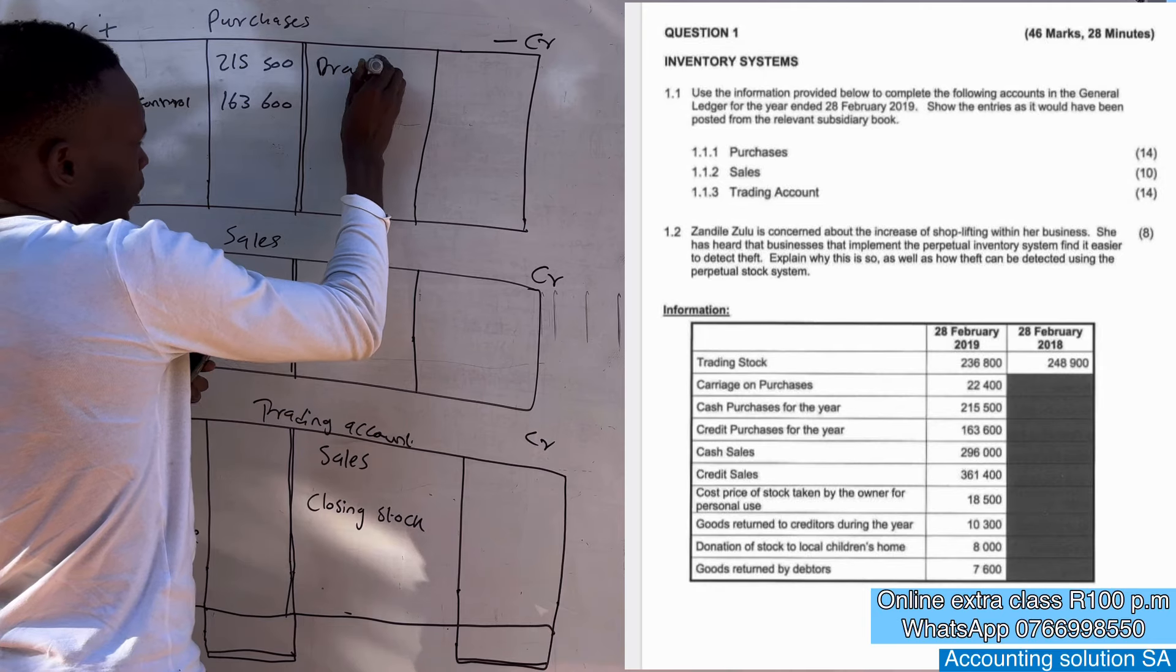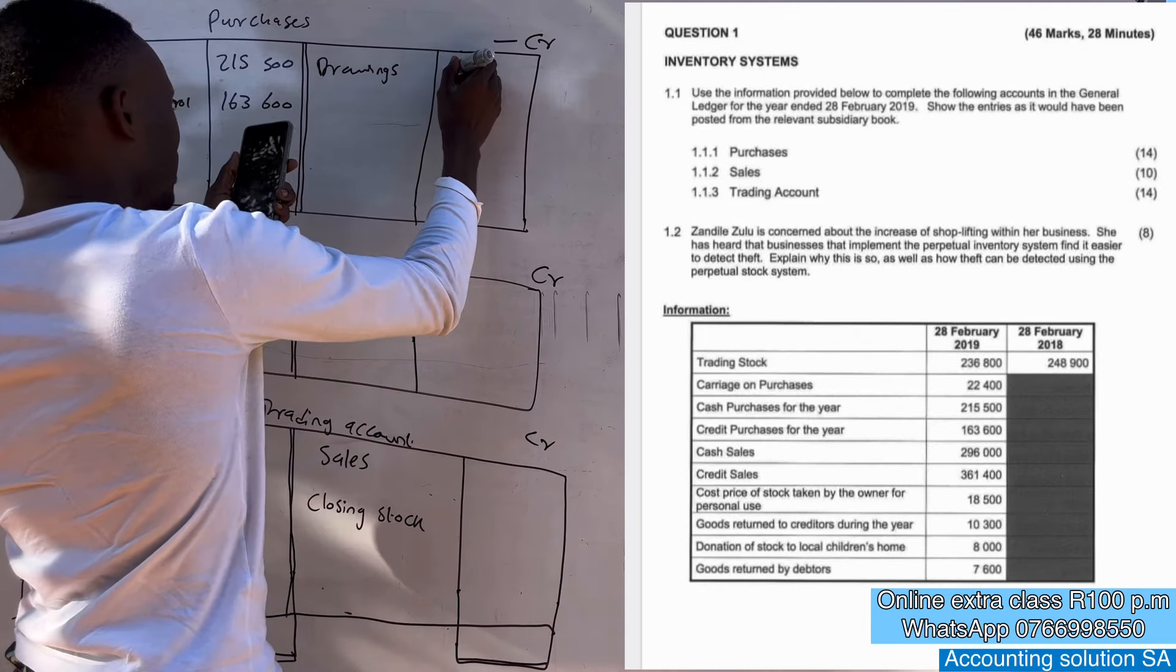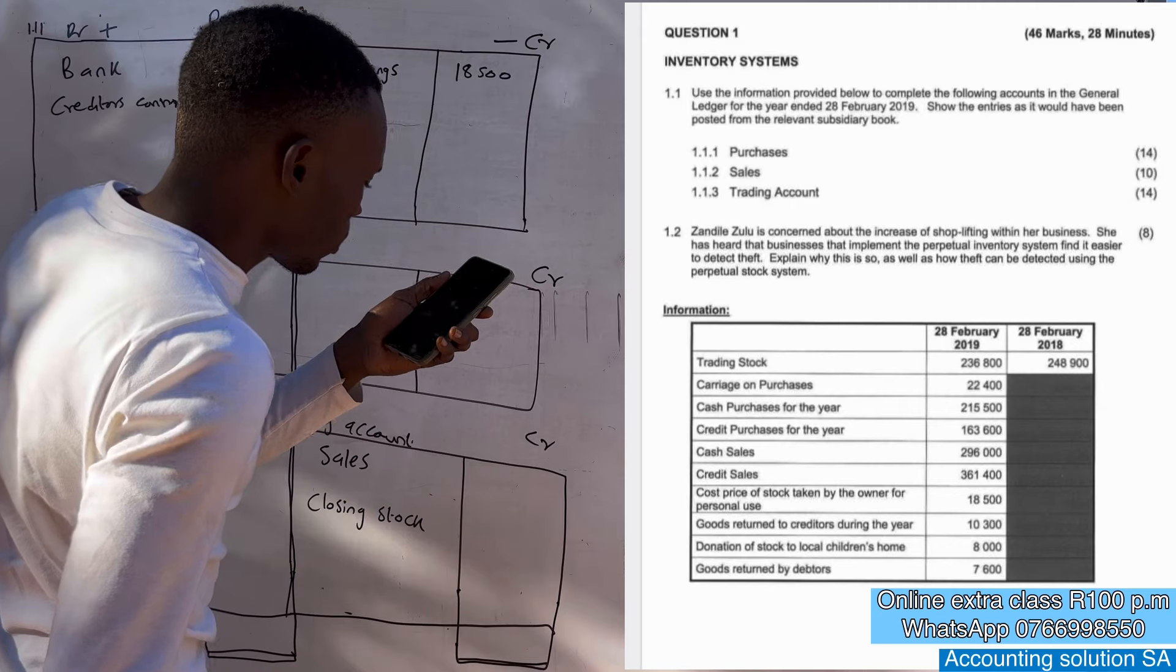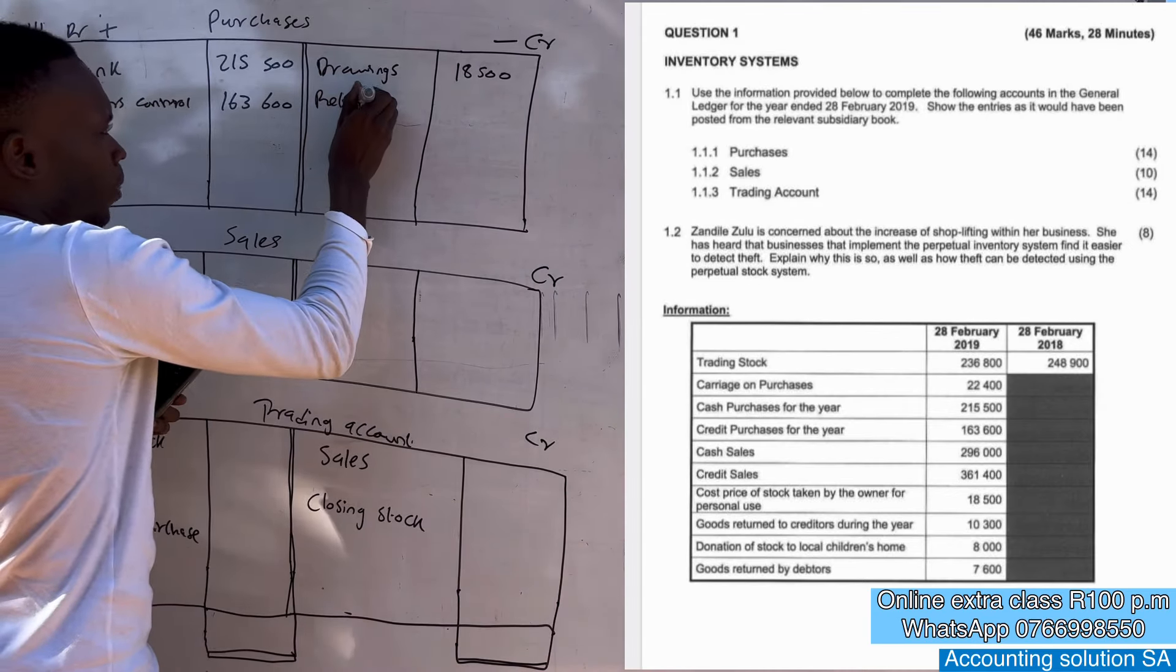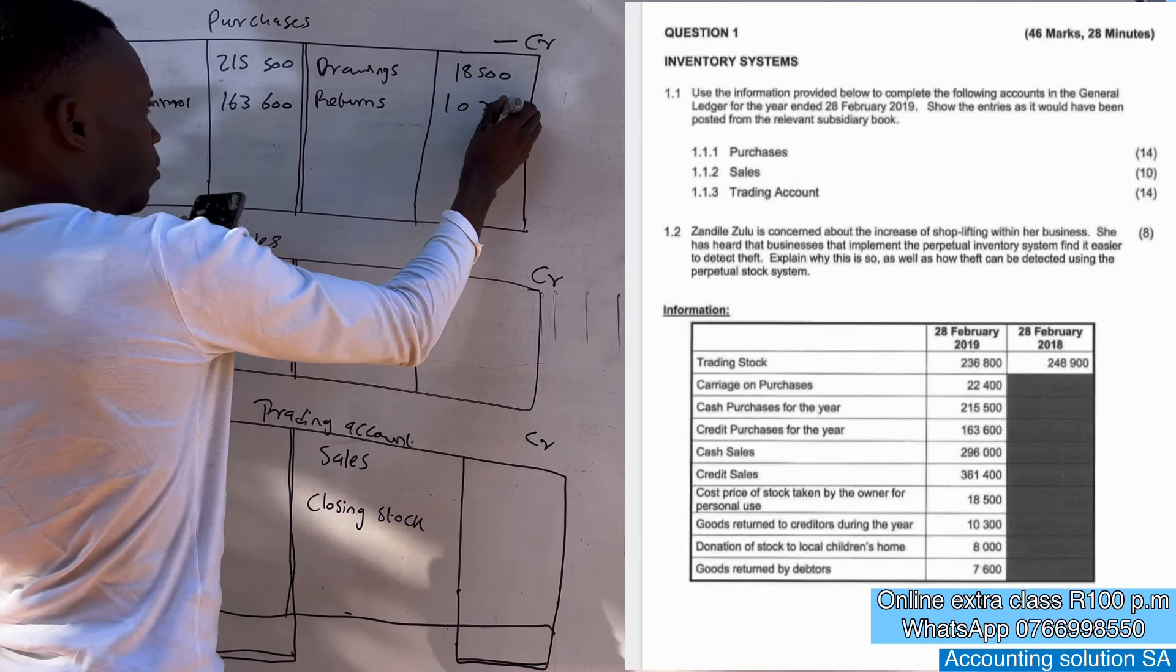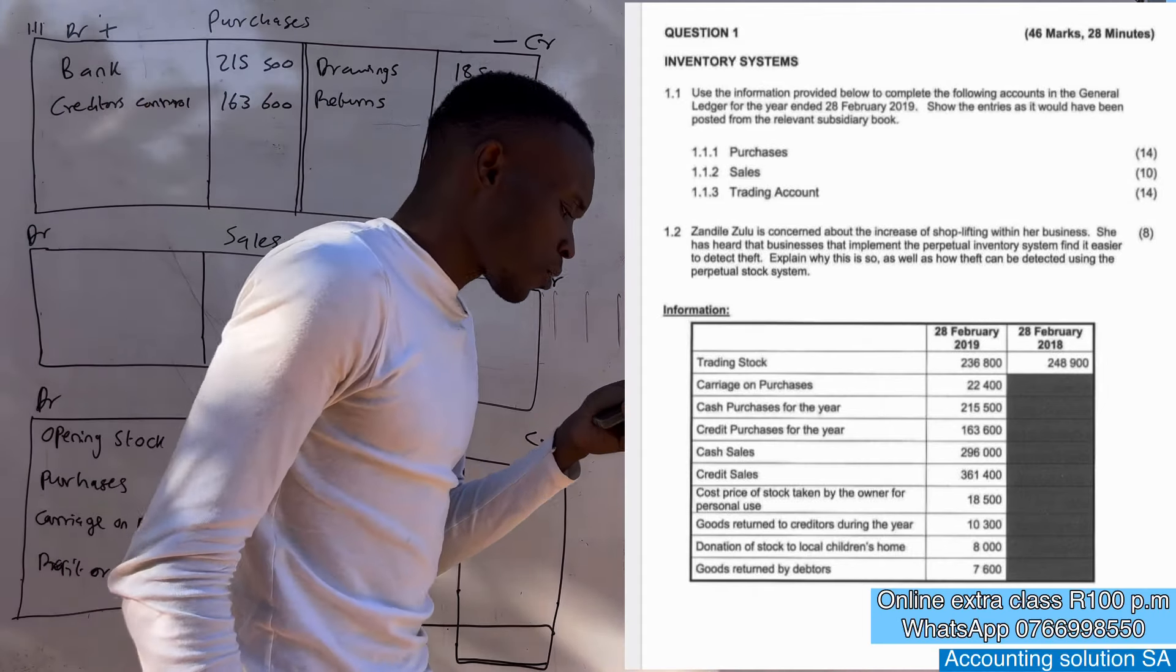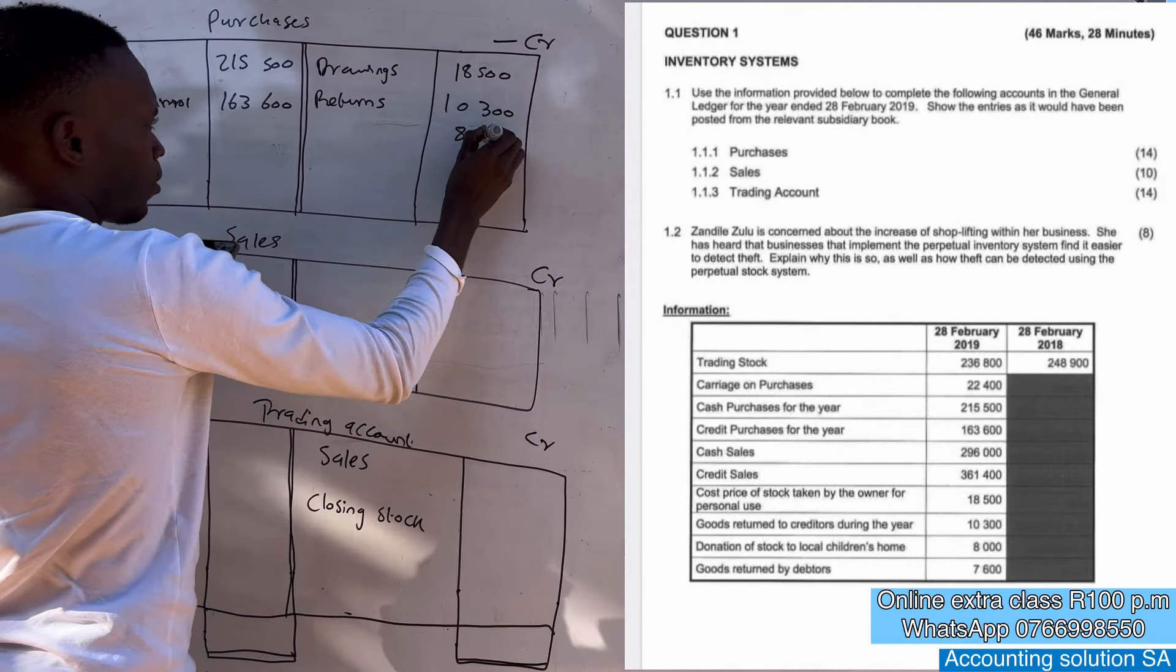Goods returned to creditors, that's a return, returns is 10,300. Very simple chapter. Donation to the, donation of stock to local children home 8,000, 8,000 of donation.